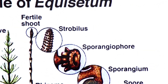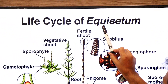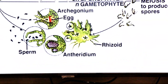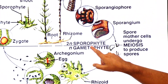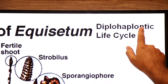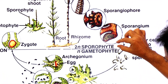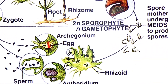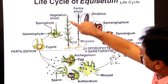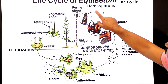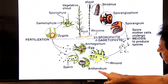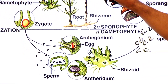Now we discuss the life cycle of Equisetum (horsetail). The dominant generation is the sporophyte, while the reduced generation is the haploid gametophyte. This is called a diplo-haplontic life cycle. In this life cycle, the first generation — the sporophyte — is diploid, and the second generation — the gametophyte — is haploid. Spore mother cells undergo meiosis to produce spores, which is called sporic meiosis. Equisetum is a homosporous plant, producing the same types of spores.